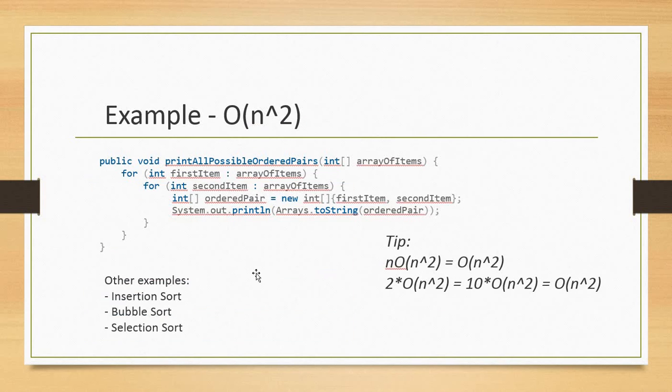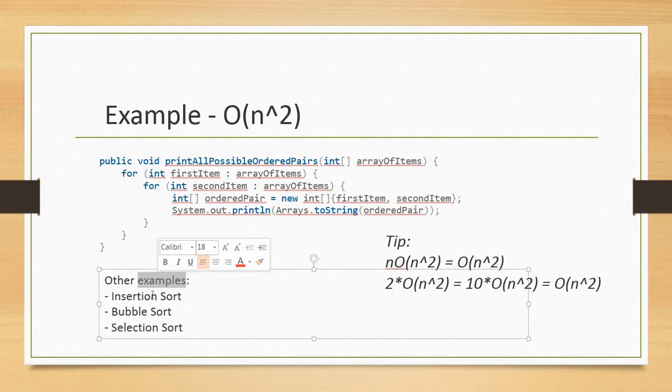Here is an example of O(n²). Let's say we have a given array and we have two loops. So if we have 10 items in the array, since we have two loops here, an inner loop and outer loop, we're going to print a hundred times. Other examples are insertion sort, bubble sort, and selection sort.